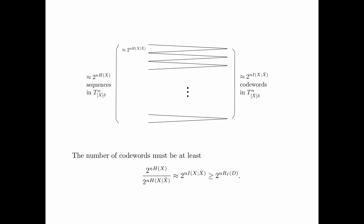This picture explains intuitively why the rate of a rate-distortion code that achieves distortion d must be at least r_I(d). The number of typical x sequences is approximately 2 to the power n times H(x). For each codeword, which is a typical x̂ sequence, it is jointly typical with approximately 2^(n·H(x|x̂)) typical x sequences. Therefore, in order for most typical x sequences to be covered by at least one codeword, the number of codewords must be at least 2^(n·H(x)) divided by 2^(n·H(x|x̂)), which is approximately 2^(n·I(x;x̂)), where I(x;x̂) ≥ r_I(d). Therefore, the rate of such a code must be at least r_I(d).